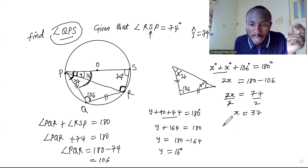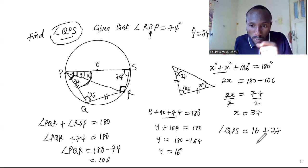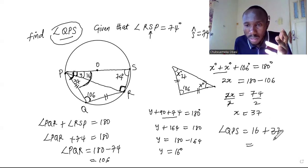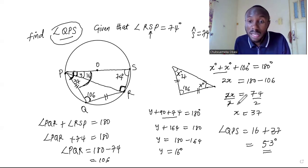So finally, angle QPS is just 16 plus 37, and that will eventually give us 53 degrees. So that is very easy. The answer to this problem is 53 degrees. Thank you very much for watching, I'll see you in the next class. Bye bye.